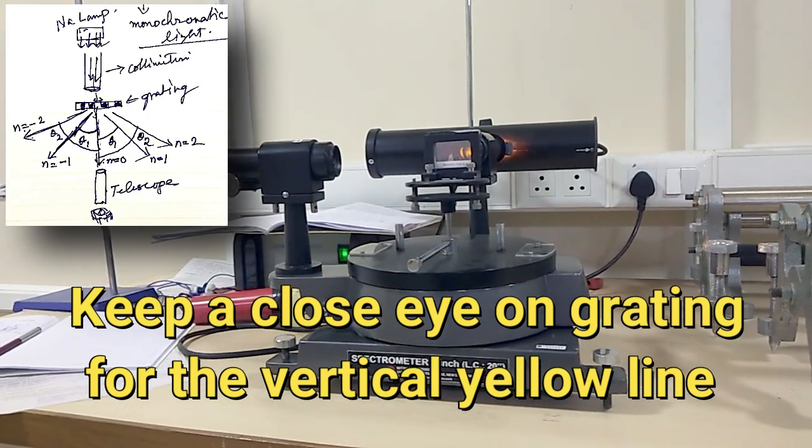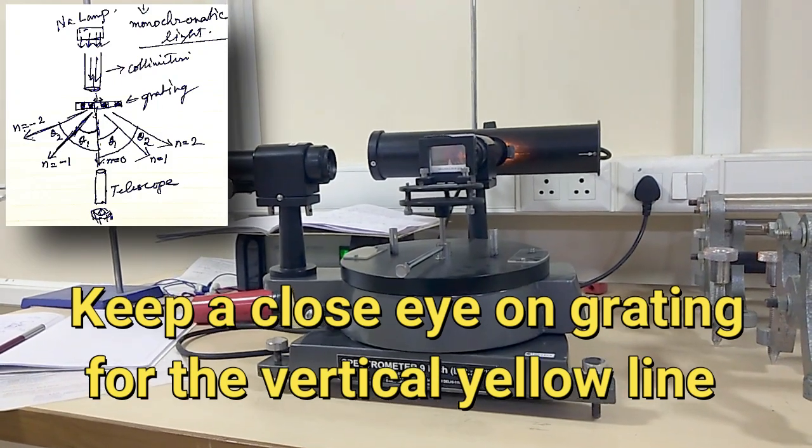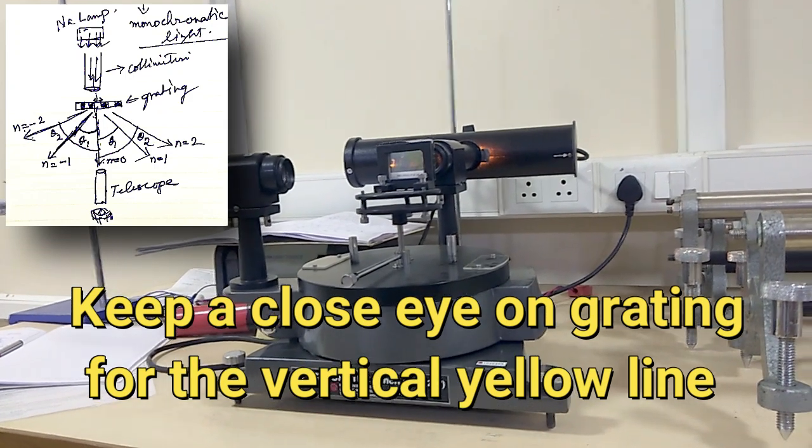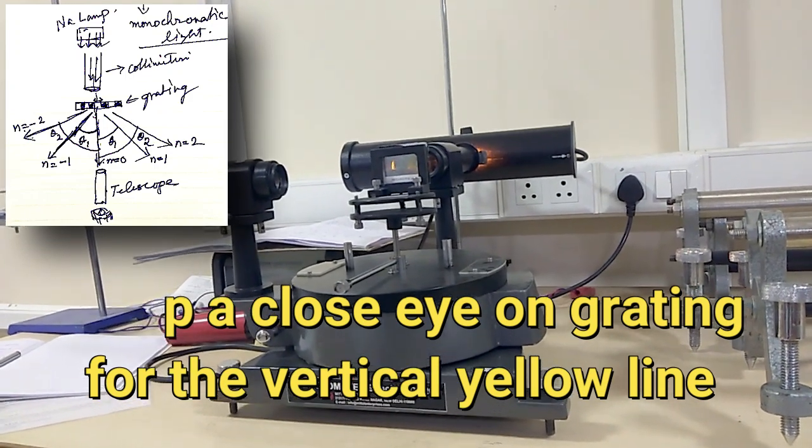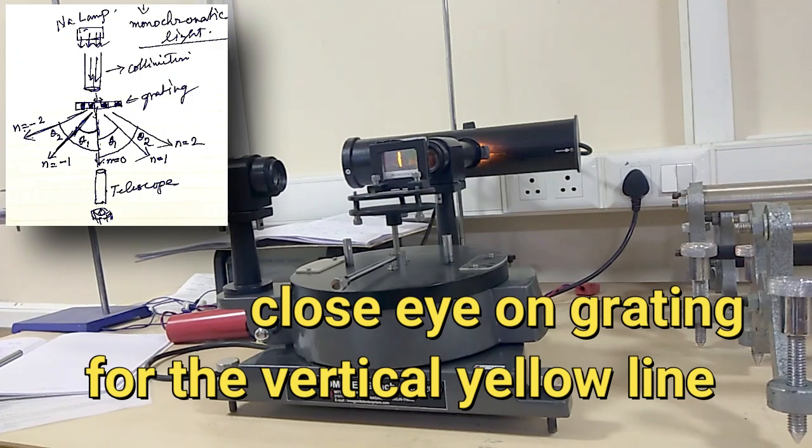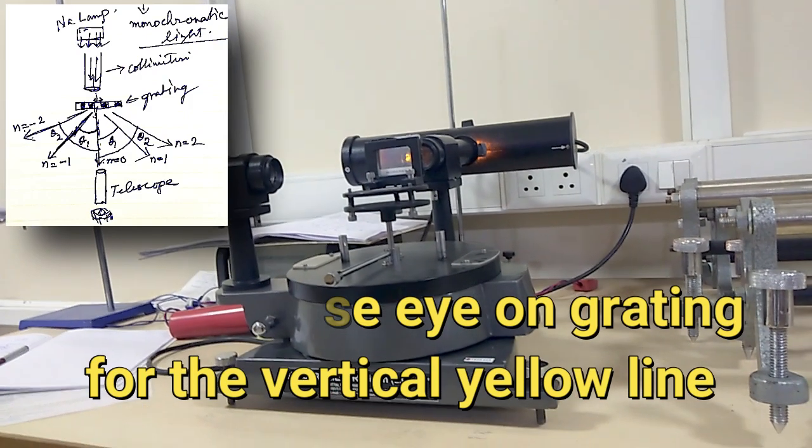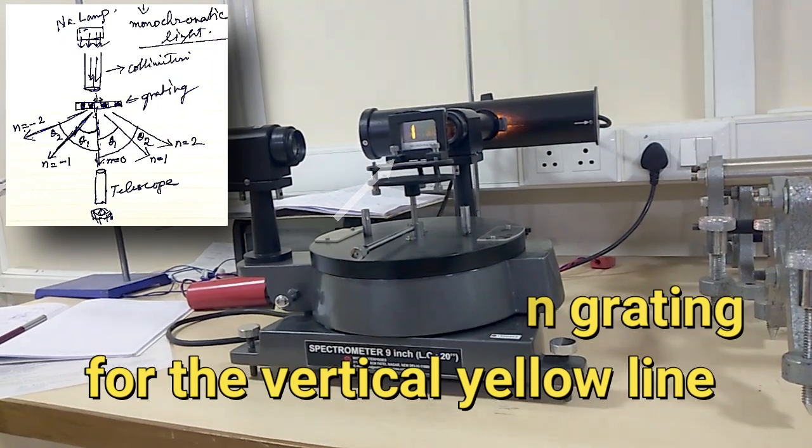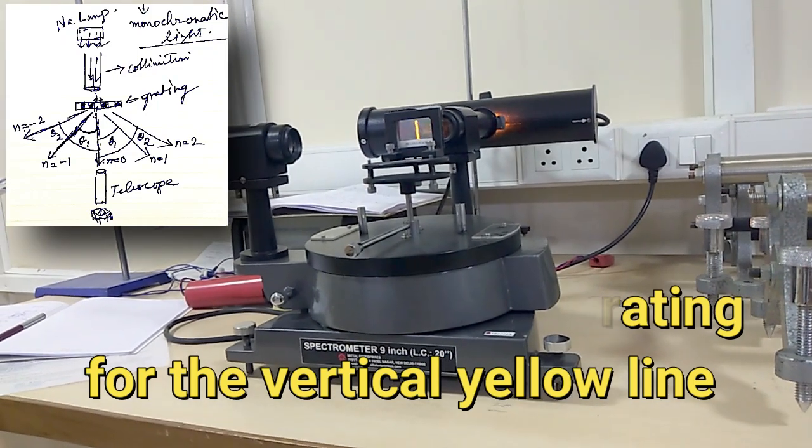So then I am further moving. If I am lucky then I will see that line again. Yes, I have seen it again. So that is n is equal to two. So we have seen n is equal to zero, n is equal to one, n is equal to two.